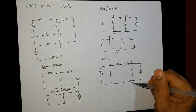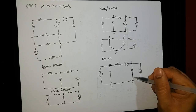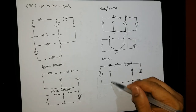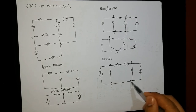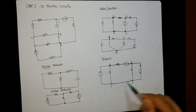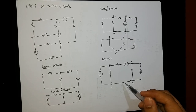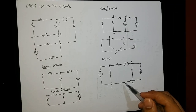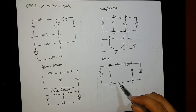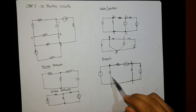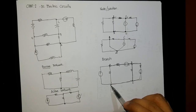If I name these points C and D, this is actually a single branch. This is another branch, this is a branch, and this is another branch. This section will not be considered a branch simply because C and D are considered a single node — there is no single component between them. By definition of branch, there should be at least a single component along that line. So how many branches do we have here? One, two, three, four, five — we have five branches and four nodes.